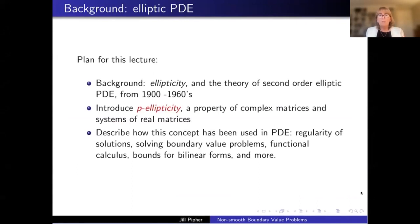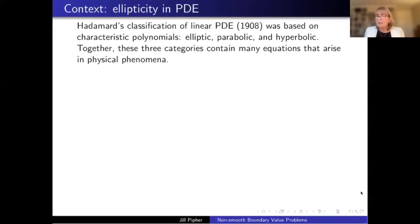And then I want to describe how we've used this concept in PDE. It's been useful in solving a variety of problems, boundary value problems, things related to holomorphic functional calculus and bounds for bilinear forms. This part will go fairly quickly, I think. Okay, so let's go back to Hadamar's classification of linear PDE in 1908. So this was based on characteristic polynomials. And we're looking at, say, second order PDEs, second order PDEs that have two derivatives. And the buckets are elliptic where you should be thinking about Laplace's equation, which is the steady state temperature distribution. Parabolic, we can think about the heat equation, heat flow, and hyperbolic, the wave equation.